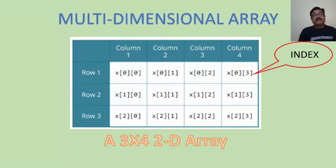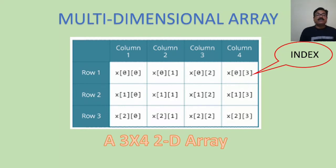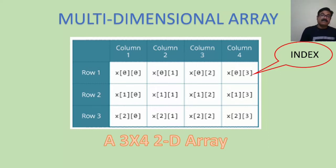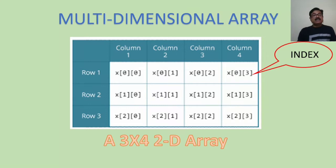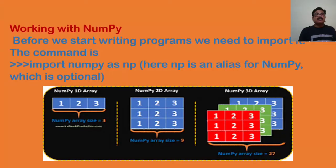Moving to the multi-dimensional array, you can see how the data has been mapped here. The first subscript is [0,0] for row and column, then [0,1] and [0,2], and so on. There are a total of 3 by 4 = 12 elements that can be stored in this two-dimensional array. So we are having the single dimensional array, the 2D array, and the multi-dimensional array, where multi-dimensional means more than one dimension.